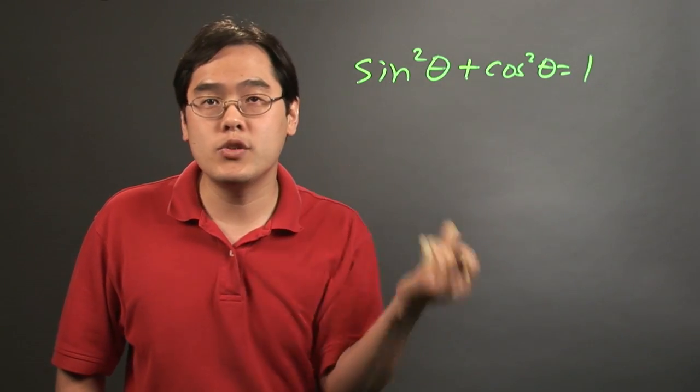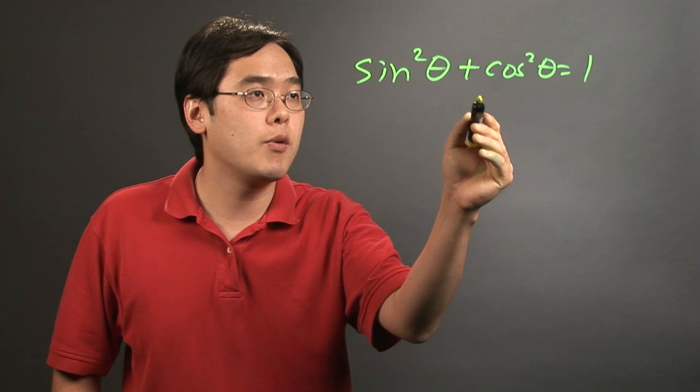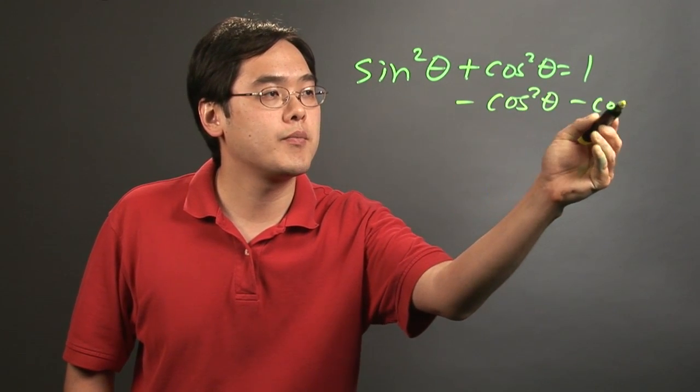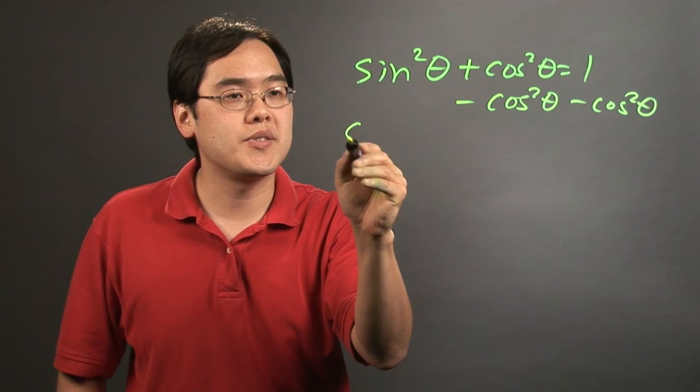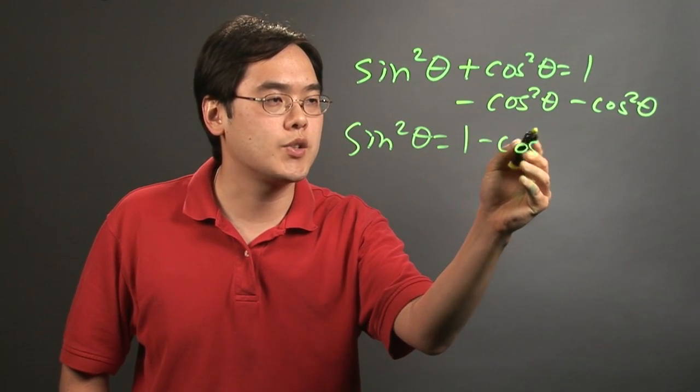It's just like using algebra. If you want to solve for sine, you want to get sine on its own. So you subtract cosine squared from both sides. So you have sine squared theta equals 1 minus cosine squared theta.